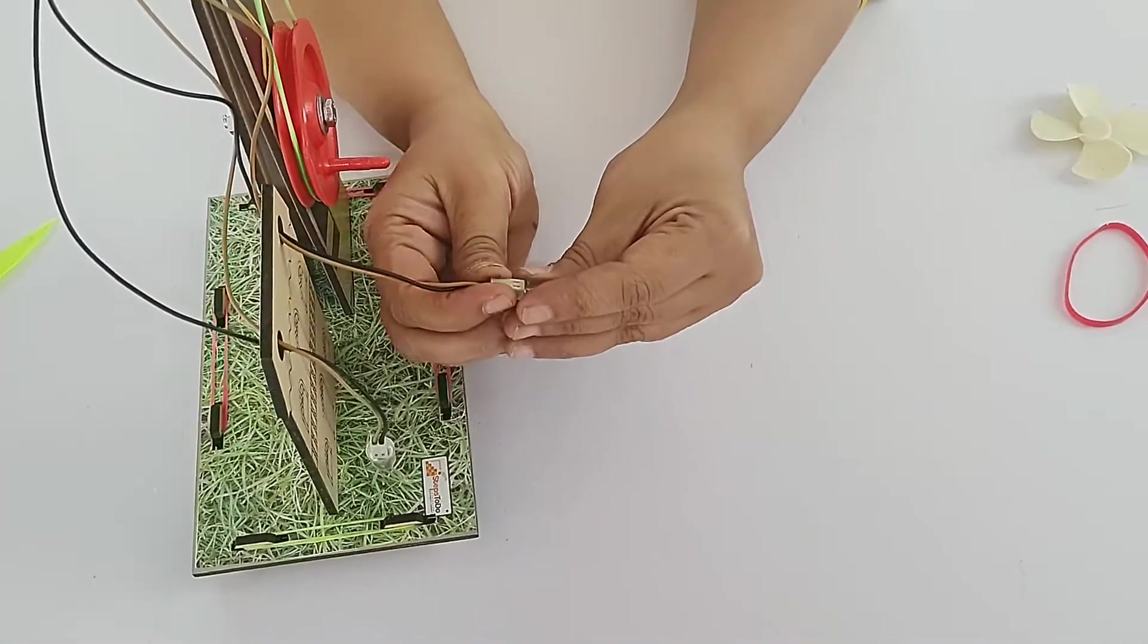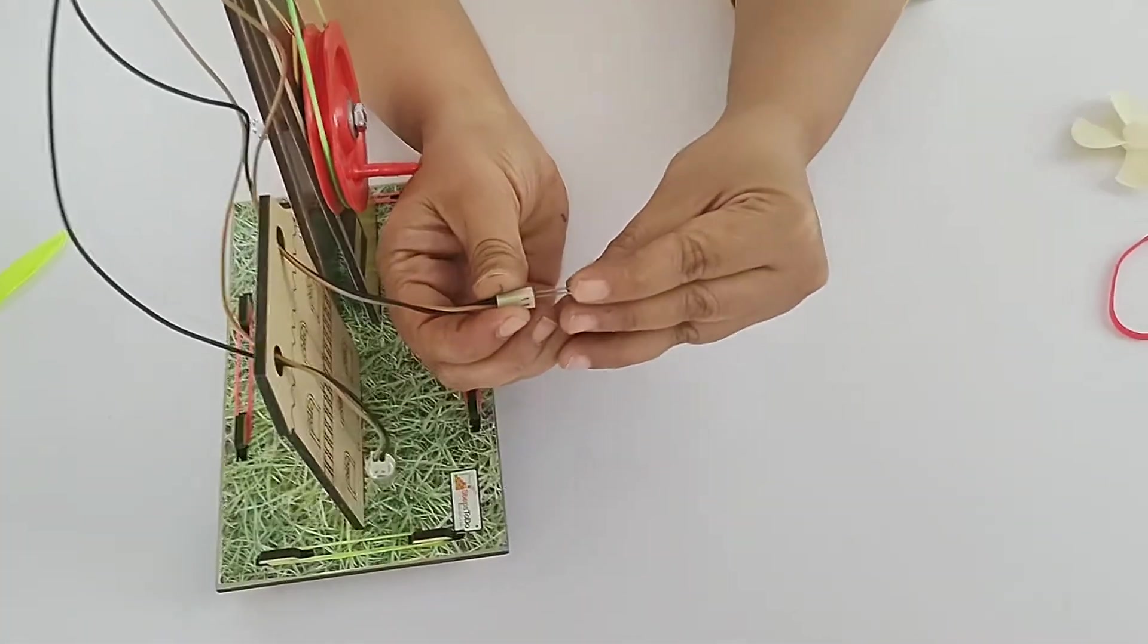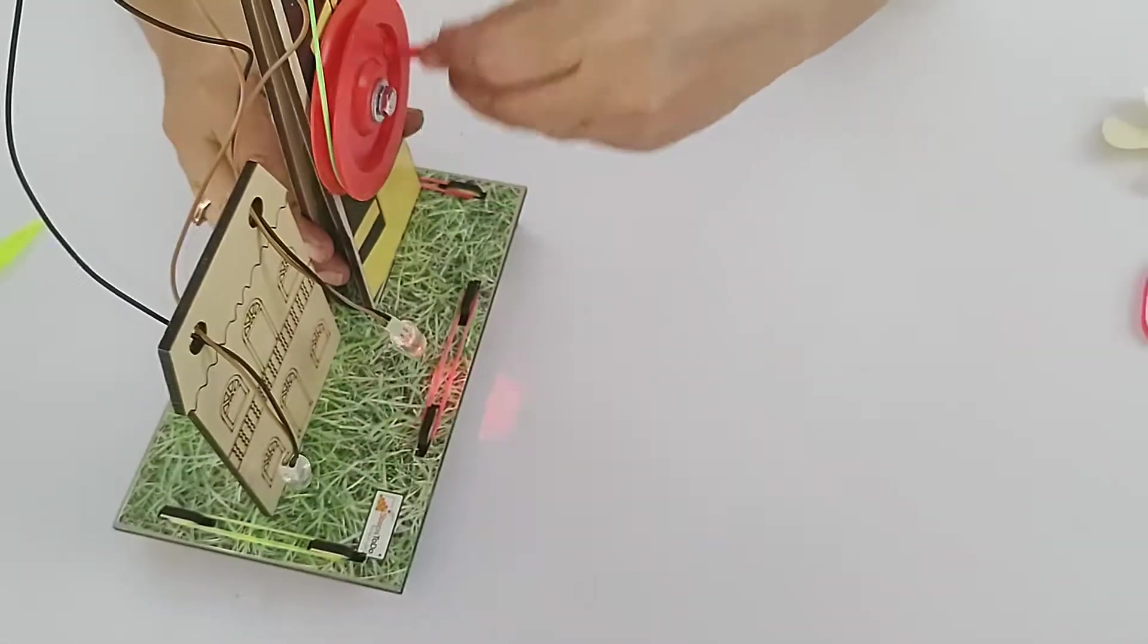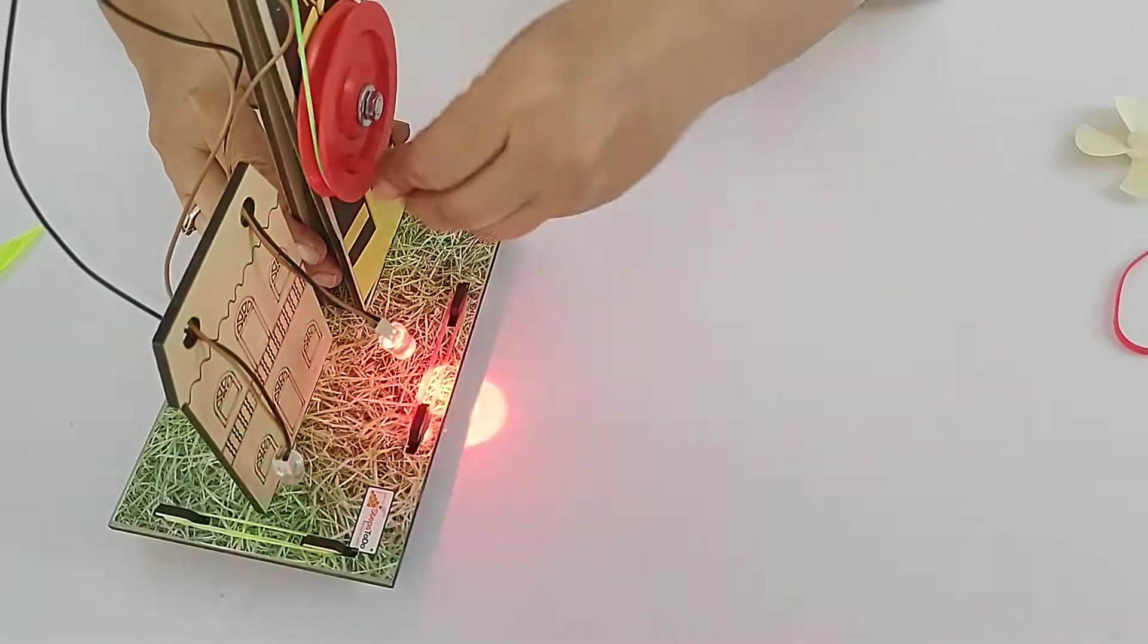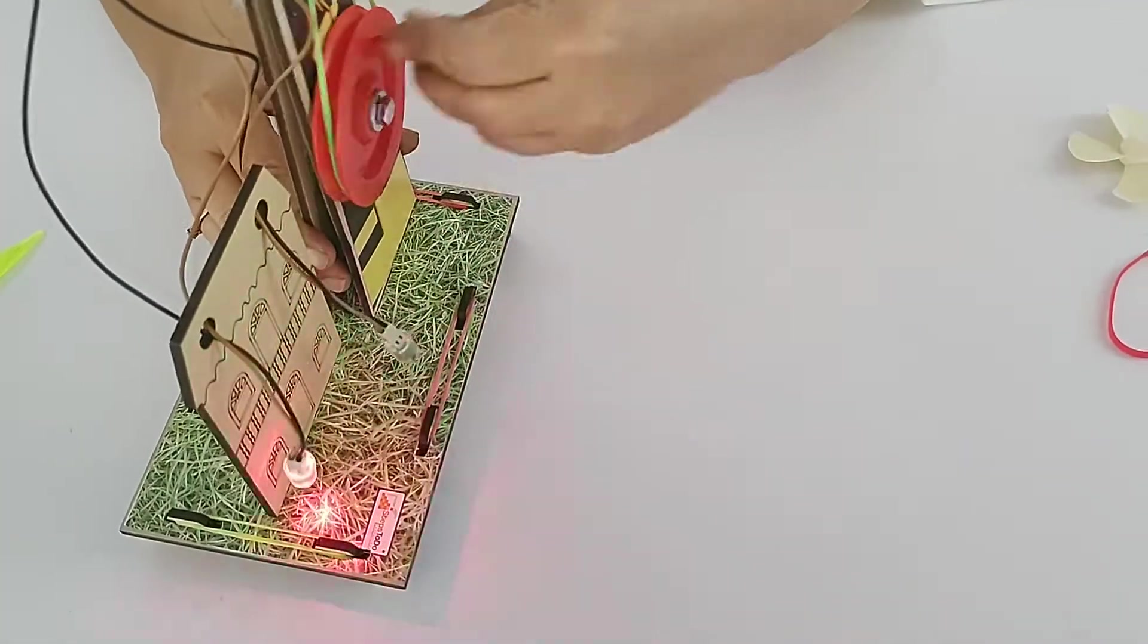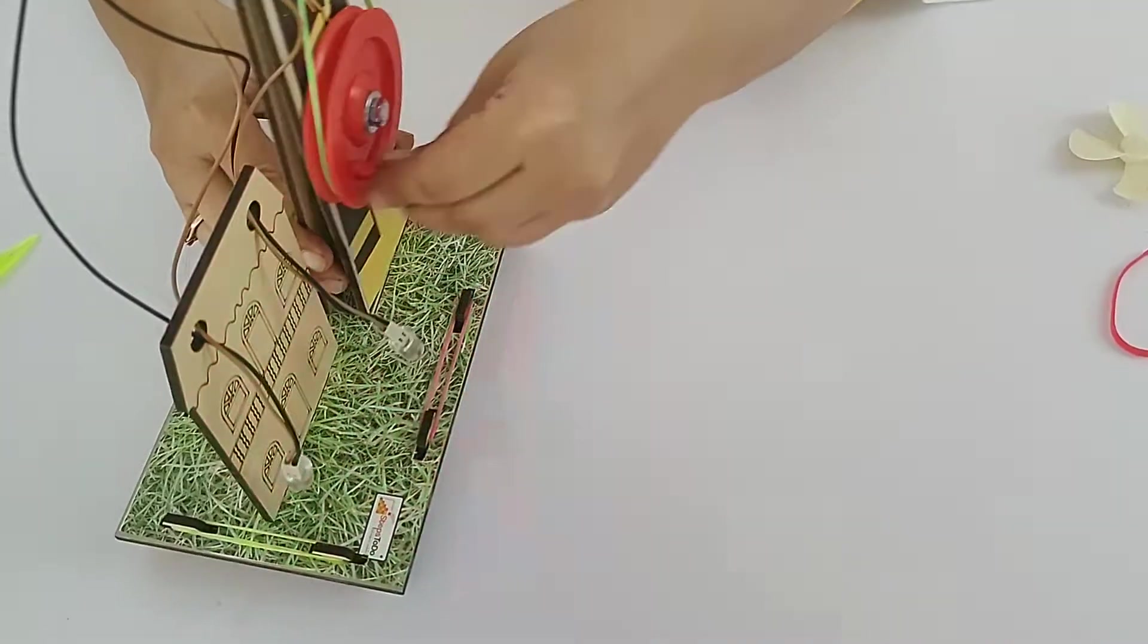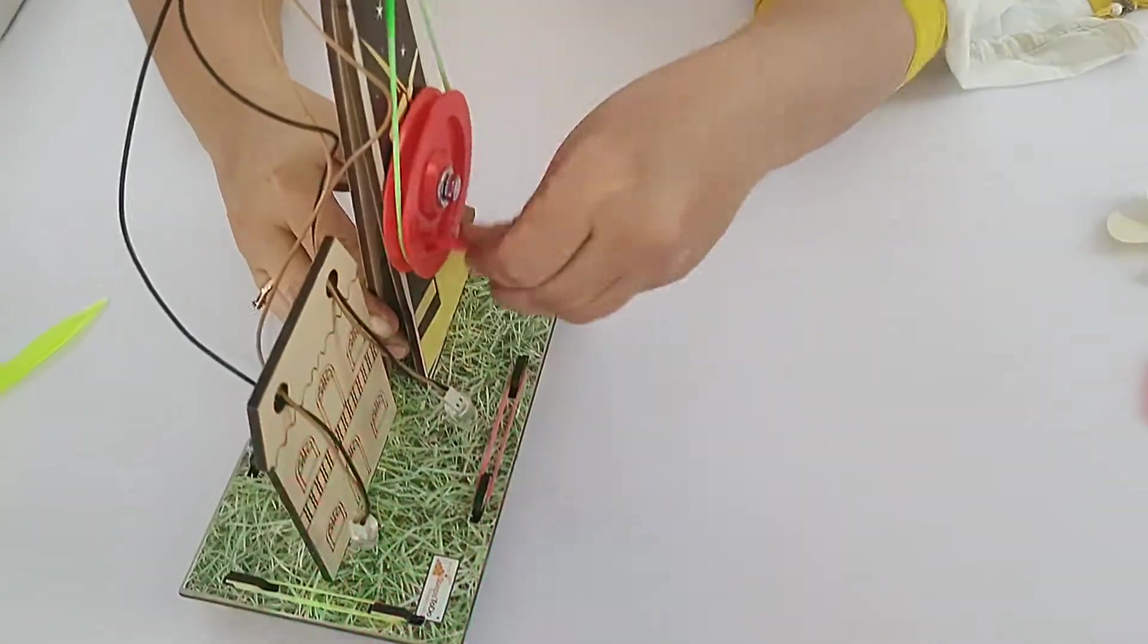What I will do, I will take out this LED and if I reverse the terminals. So now you see, anticlockwise here one LED is glowing, anticlockwise another LED is glowing. So both ways this motor will generate electricity.